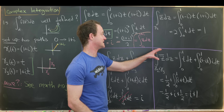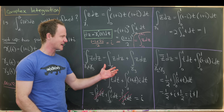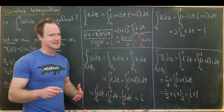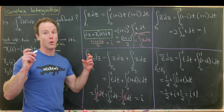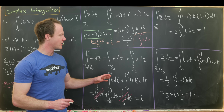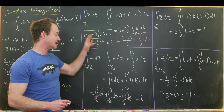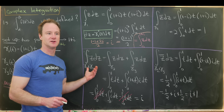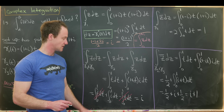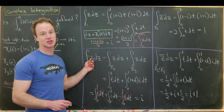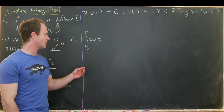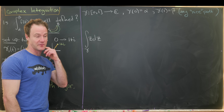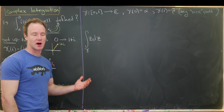So the integral of z-bar over the two paths gave different answers (1 vs 1+i), meaning z-bar is not path independent. Even though z-bar seems like a nice complex function, it doesn't have the properties you'd want. Meanwhile, the function z does appear to be path independent — let's prove that now.